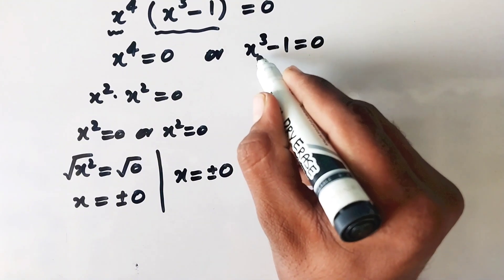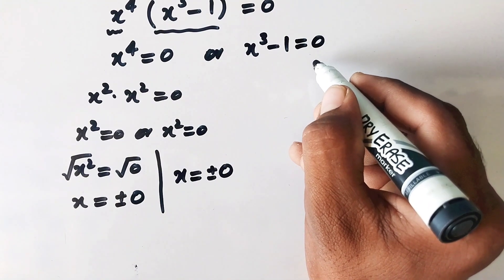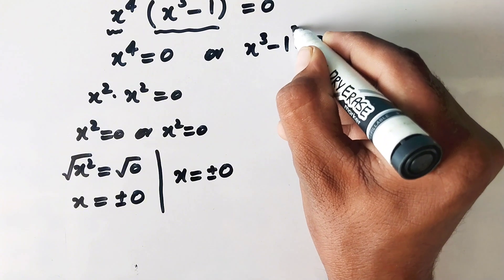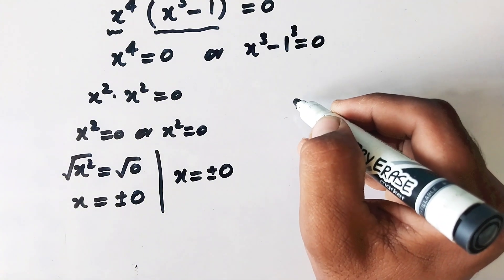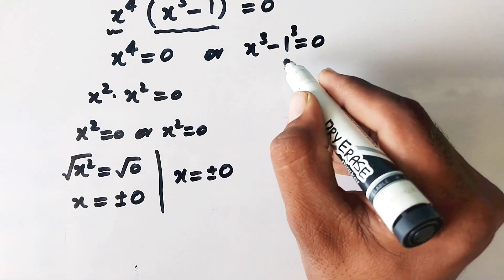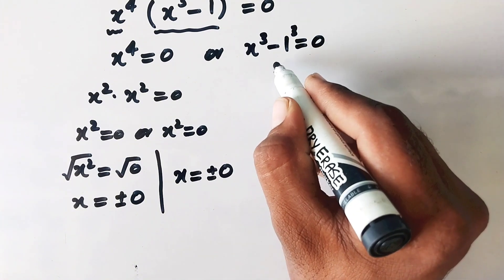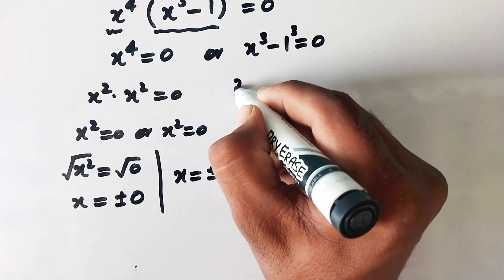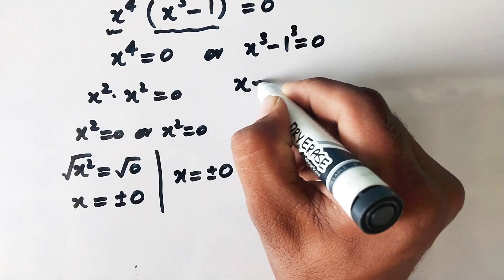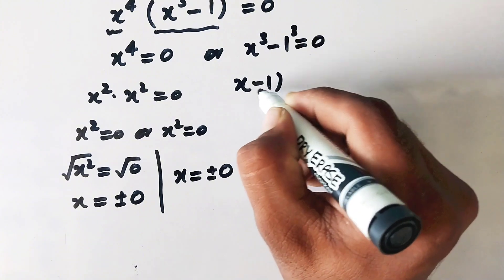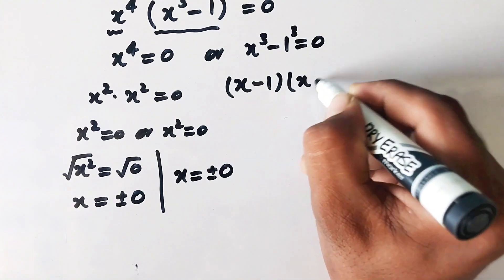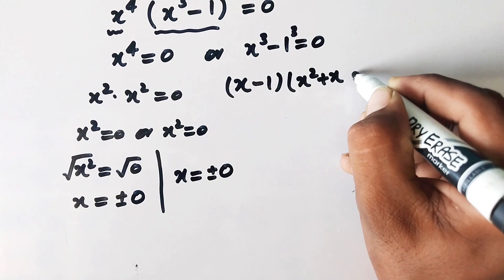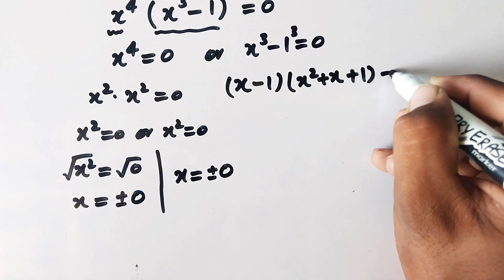On the other side, x cubed minus 1 equal to 0. Since 1 is the same as 1 cubed, we can apply the algebraic formula for difference of cubes, which results in (x minus 1) times (x squared plus x plus 1) equal to 0.